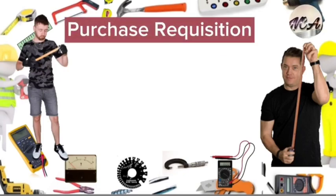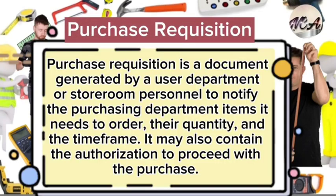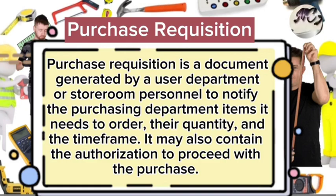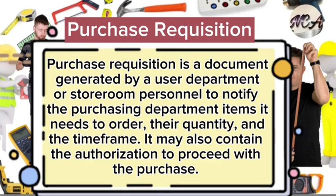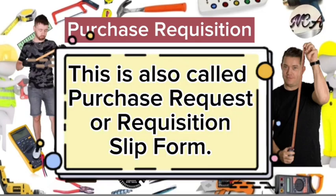The first type is the purchase requisition. A purchase requisition is a document generated by a user department or store-in personnel to notify the purchasing department of items it needs to order, their quantity, and the time frame. It may also contain the authorisation to proceed with the purchase. This is also called a purchase request or requisition slip form.